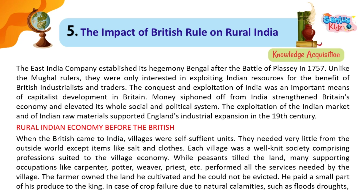The East India Company established its hegemony in Bengal after the Battle of Plassey in 1757. Unlike the Mughal rulers, they were only interested in exploiting Indian resources for the benefit of British industrialists and traders.